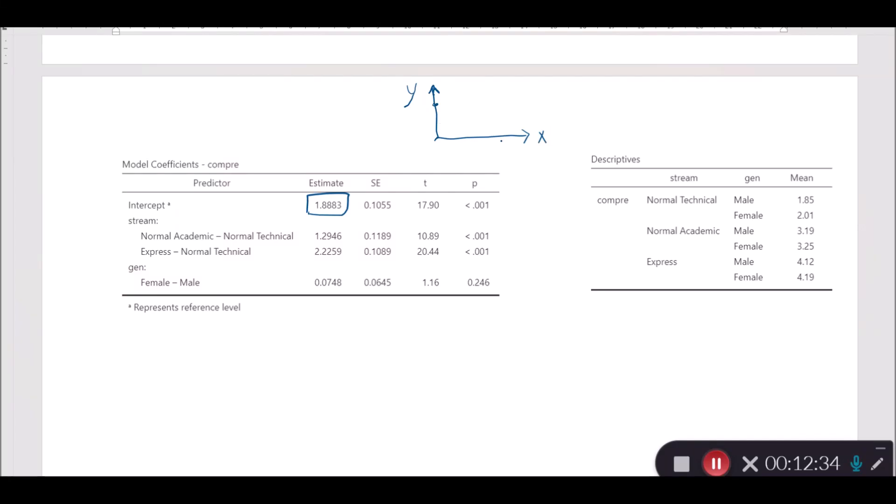The amount of X here is zero whenever the reference group is male, because male is zero. If you recall, male has been represented by zero in our data. It's nominal but has been represented by zero. When the stream is at its lowest level, in this case it's actually normal technical.